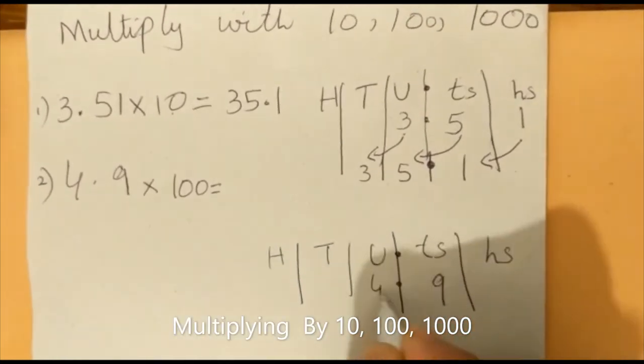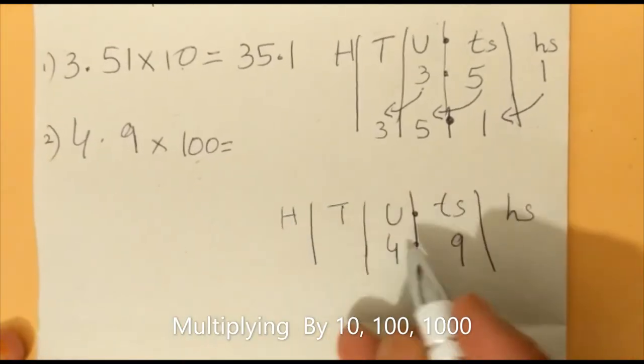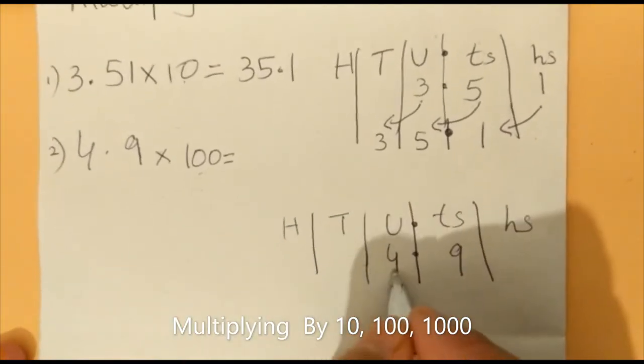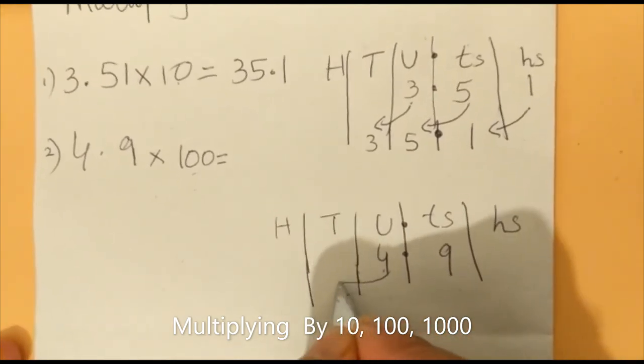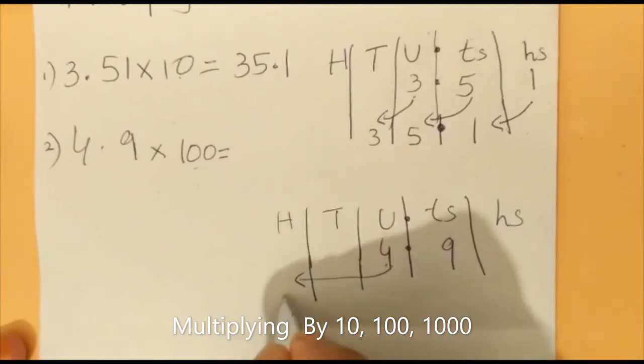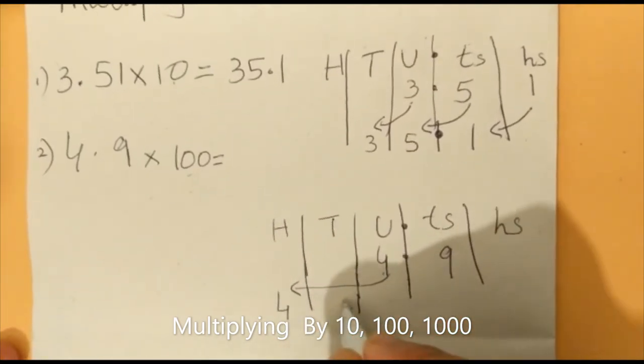We have 4.9 here. Now with two zeros, we will move two positions. One position, two positions - 4 here and 9 here.